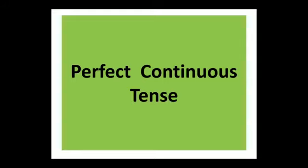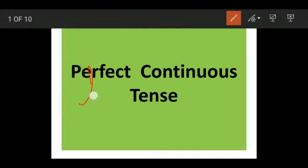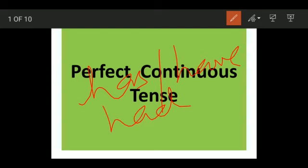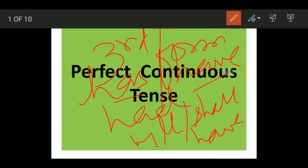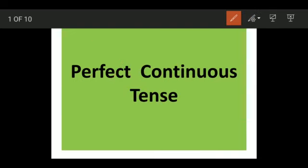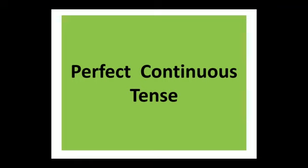In yesterday's class we studied the perfect form of tenses, where we studied the use of has or have in present perfect, had in past perfect, and will/shall have in future perfect tense. These are used along with the third form of the verb. Today we will be studying about perfect continuous tense.